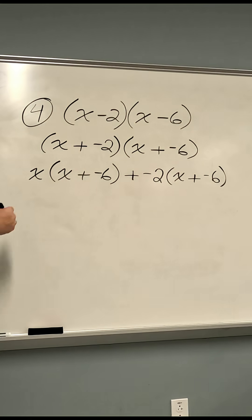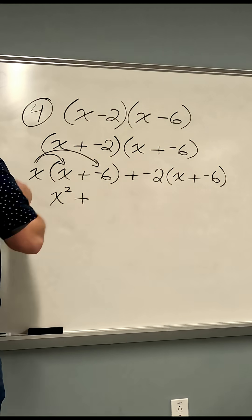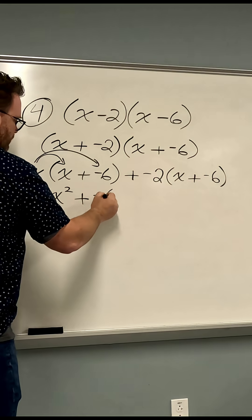We'll start with x times x. That's going to be x squared plus x times negative 6, which is negative 6x.